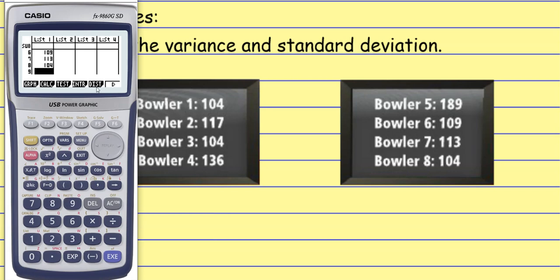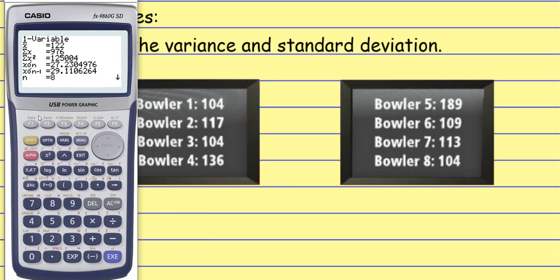So I've got all those punched in. Now what I want to do is I'm going to calculate some values. So right here, F2 is associated with calculate. And what I want to calculate, it's called one variable statistics. And it's one variable because we're literally only looking at one thing. We're only looking at bowling scores here. If we were looking at two variables like X and Y, then we could do something like two variable statistics. So right here, one variable statistics. And it'll automatically use list one for this.